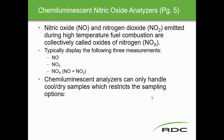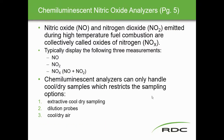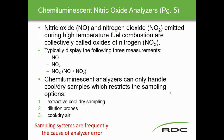Chemiluminescence analyzers can only handle cool, dry samples, which restricts sampling options. These analyzers are normally positioned away from the plant, in the prevailing wind direction. They require an extractive cool dry sample — either dilution probes or cool dry air sample systems. A common cause of issues is the sample system itself, not the analyzer.